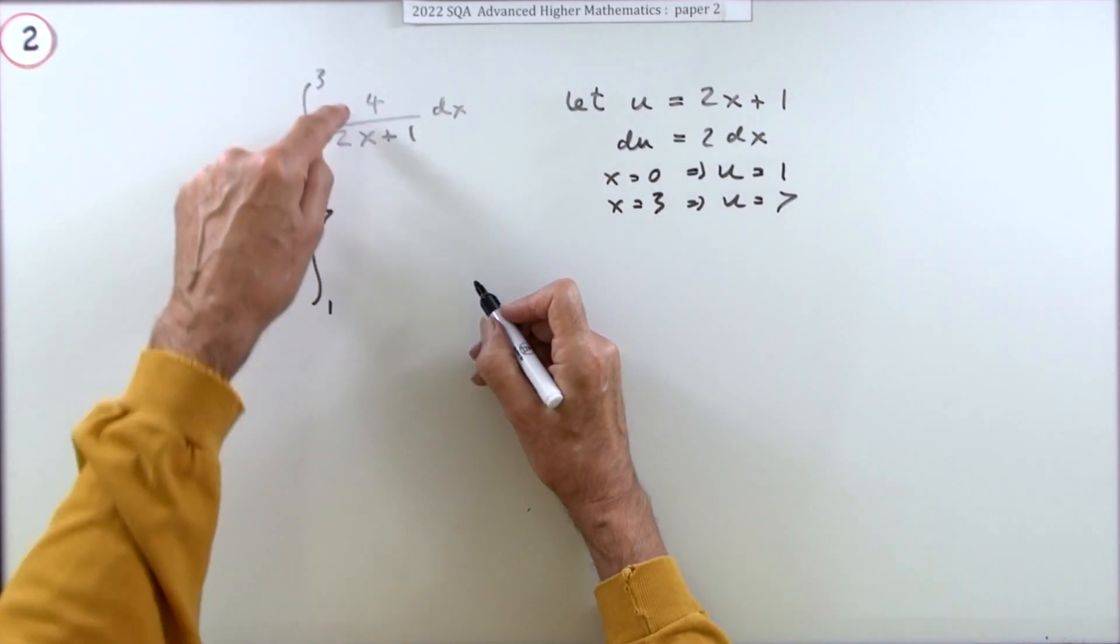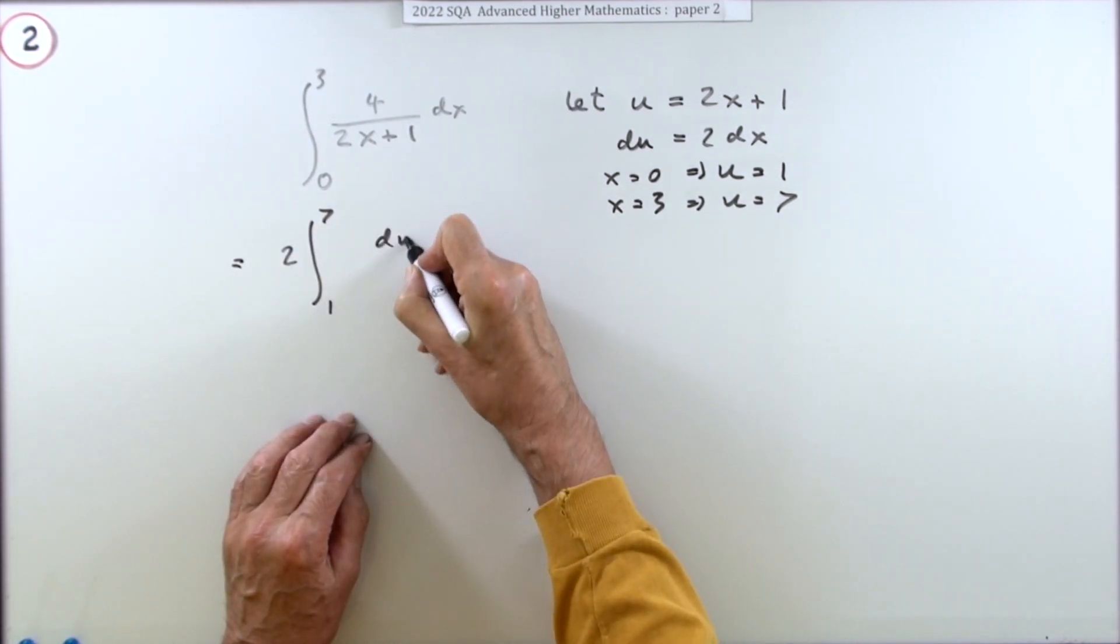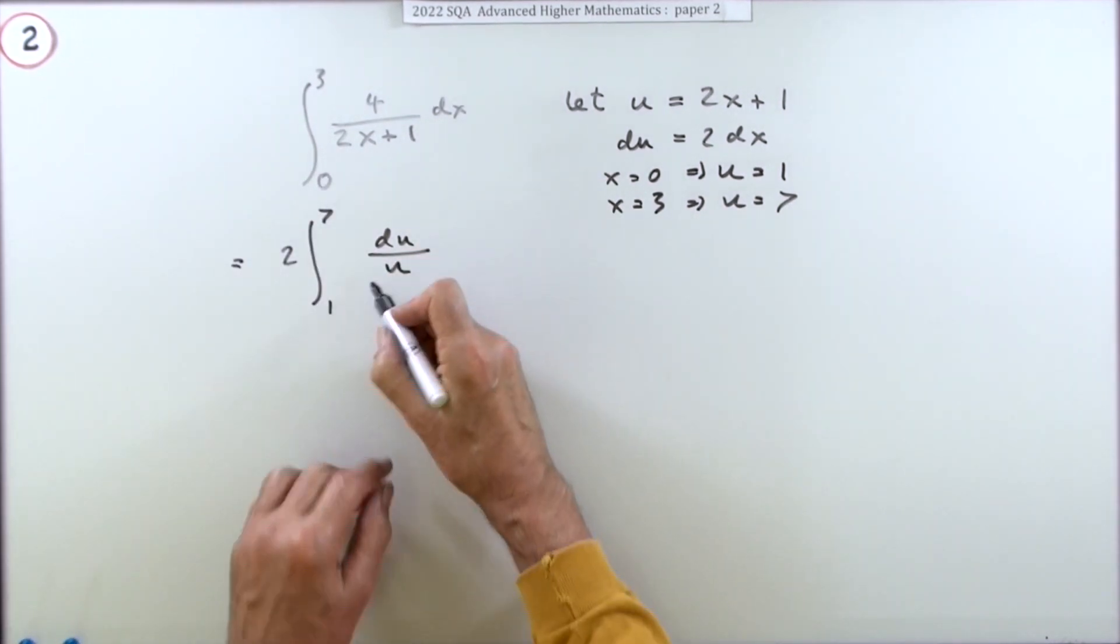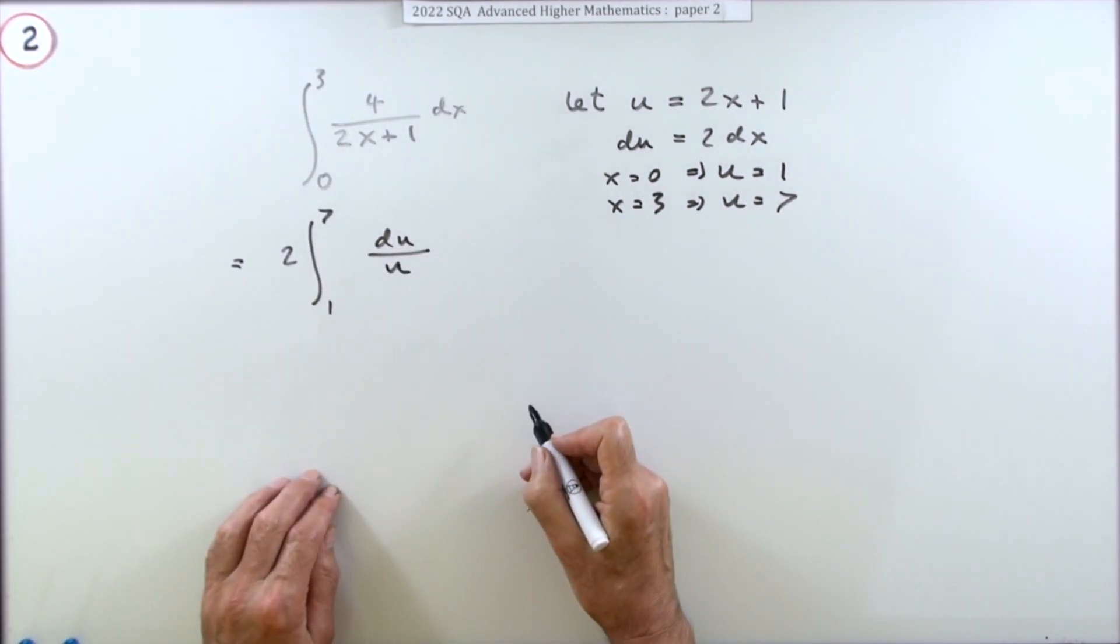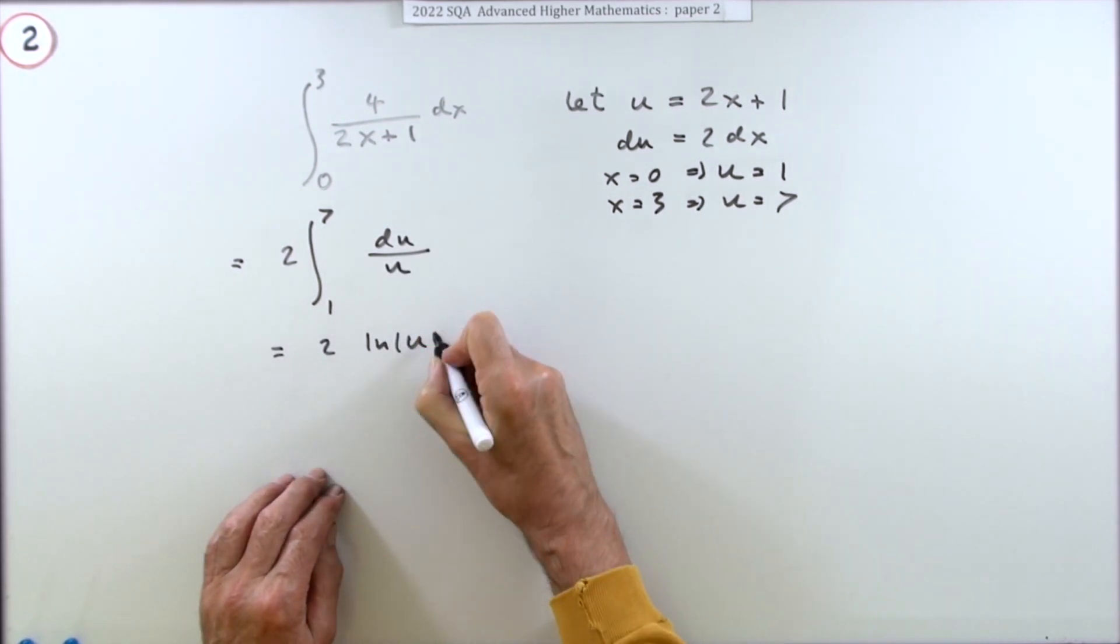To go in its place I've got a 4 dx, I've still got two left, now I've got a du. Bottom just changes into u, and you recognize that, or you may have written one over u times du. Recognize that immediately as log, so you've got two ln u, pop it in its wee safety brackets to be evaluated from one to seven.